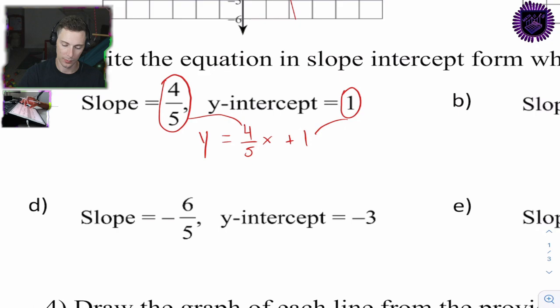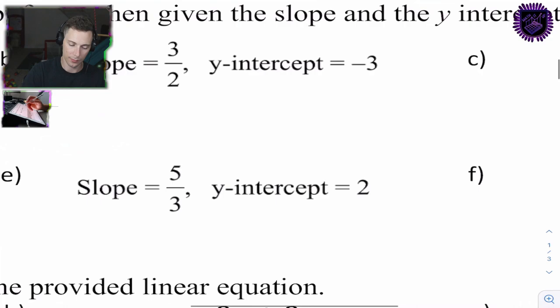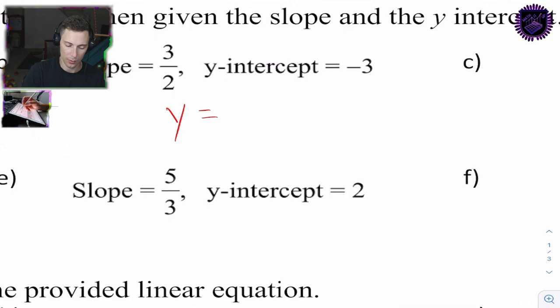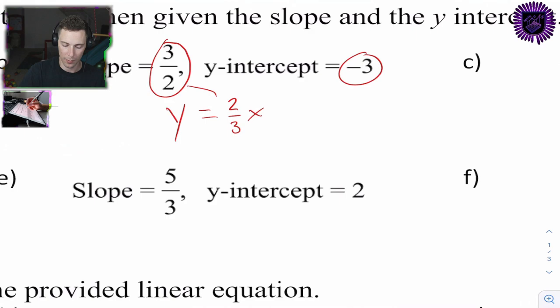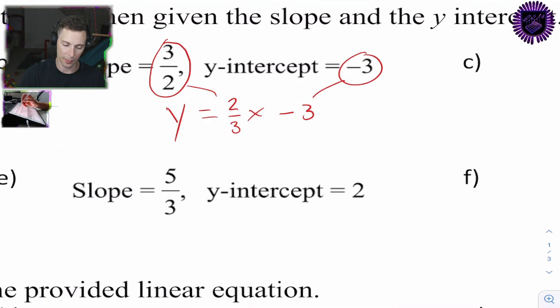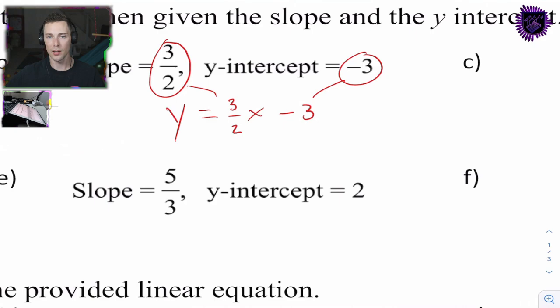For 3b: y = 3/2 x minus 3. The slope is 3 over 2 and the y-intercept is negative 3.